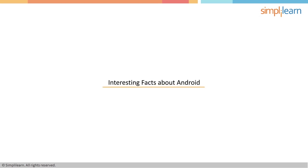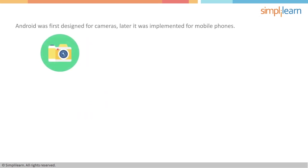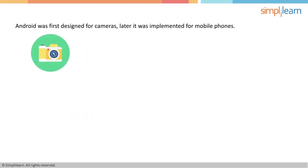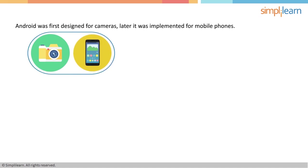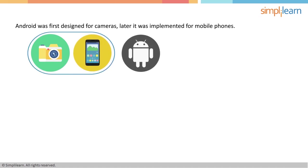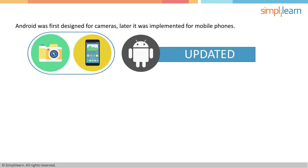Interesting facts about Android: Android was first designed for cameras, and later it was implemented for mobile phones. When compared with other operating systems, the Android OS has been updated an incredible number of times, resulting in a web-based service which is remarkably different than the original version of this mobile operating system.